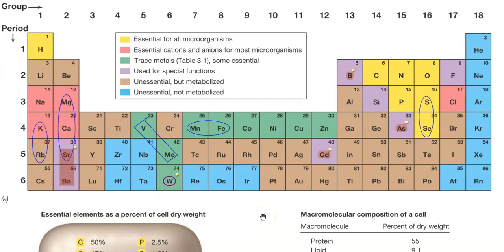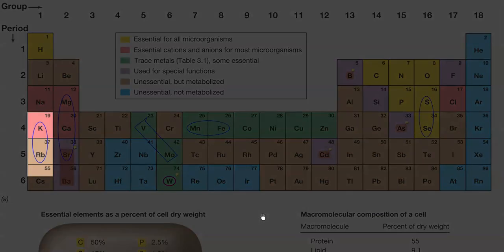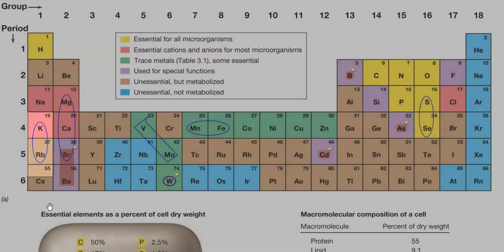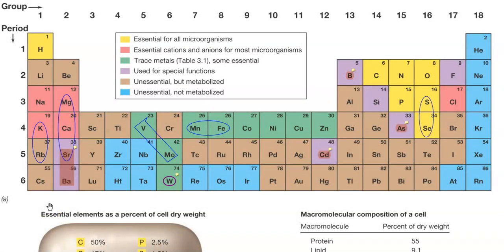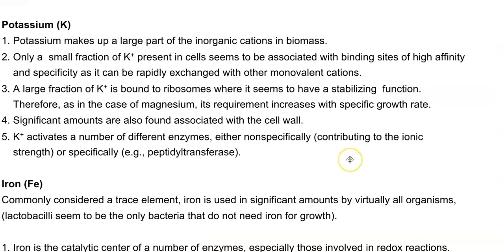Looking at the periodic table of chemical elements, you can see that potassium is marked together with rubidium — both are monovalent cations. In the absence of potassium, its role can be carried out by rubidium. A large fraction of potassium is bound to ribosomes where it seems to play a stabilizing function similar to that of magnesium. Its requirement therefore increases along with the specific growth rate.